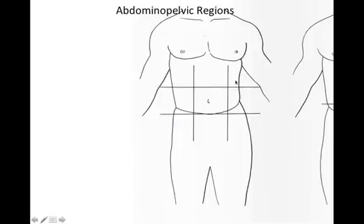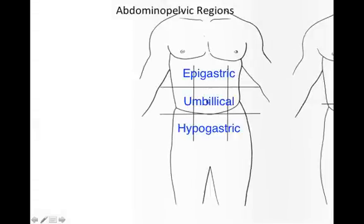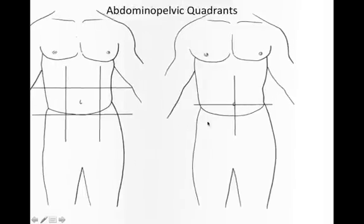Mirrored on the opposite side are the left hypochondriac, the left lumbar and the left iliac. Back to the middle we have the epigastric, the umbilical and the hypogastric regions.